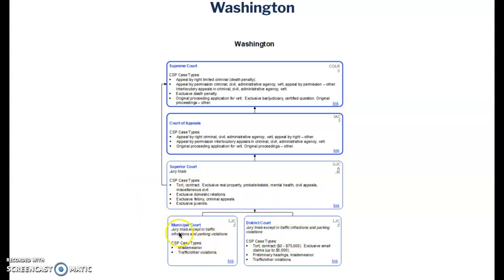In the state of Washington, municipal courts and district courts hear certain types of cases — misdemeanors, traffic and other violations. District courts are allowed to hear torts or contract claims up to $75,000, and they have exclusive jurisdiction over small claims up to $5,000. For example, if I lived in Washington and was going to sue somebody for $2,000, I could not sue them in Superior Court because it's under $5,000 — the district court would have jurisdiction over those small civil claims.